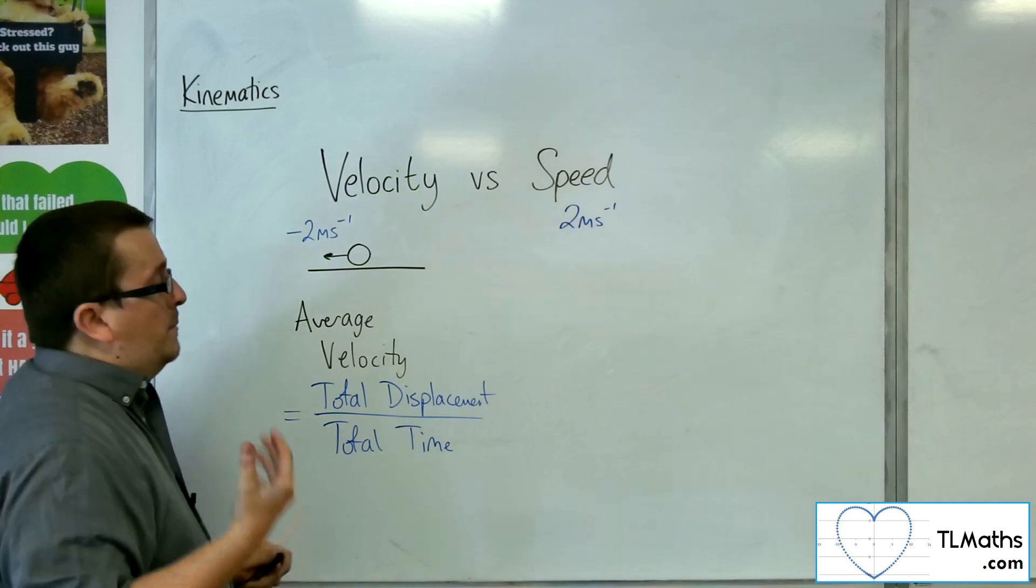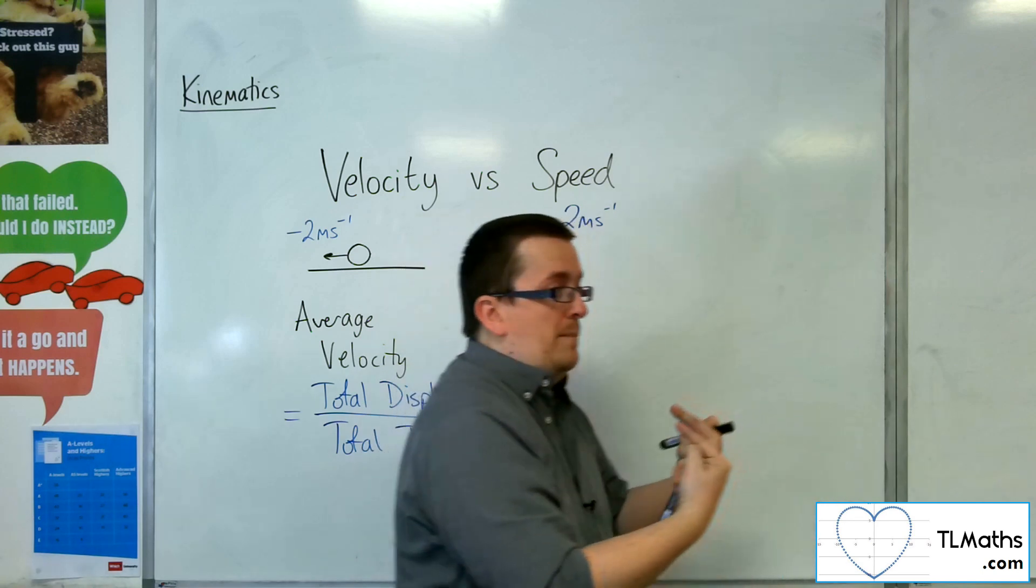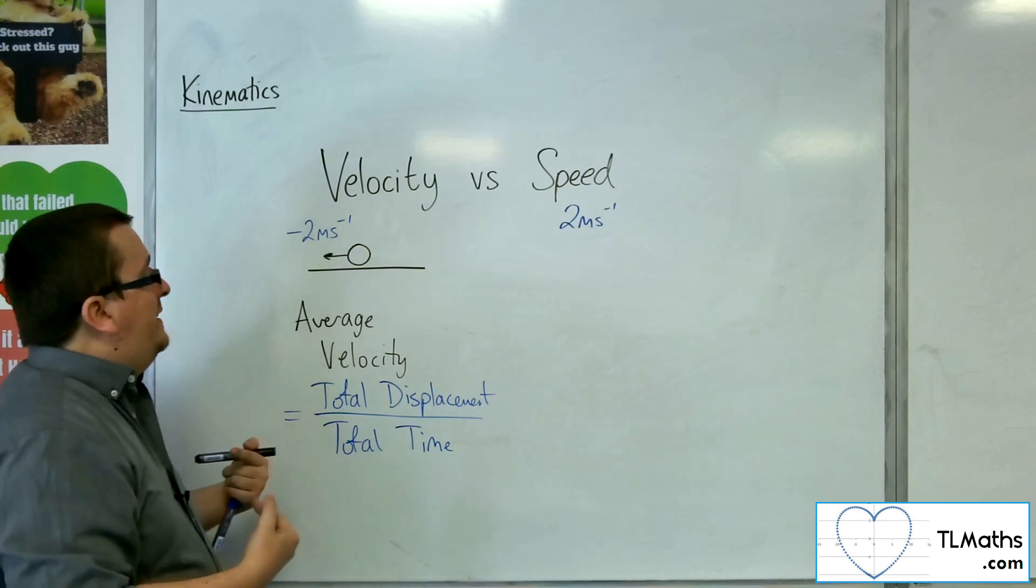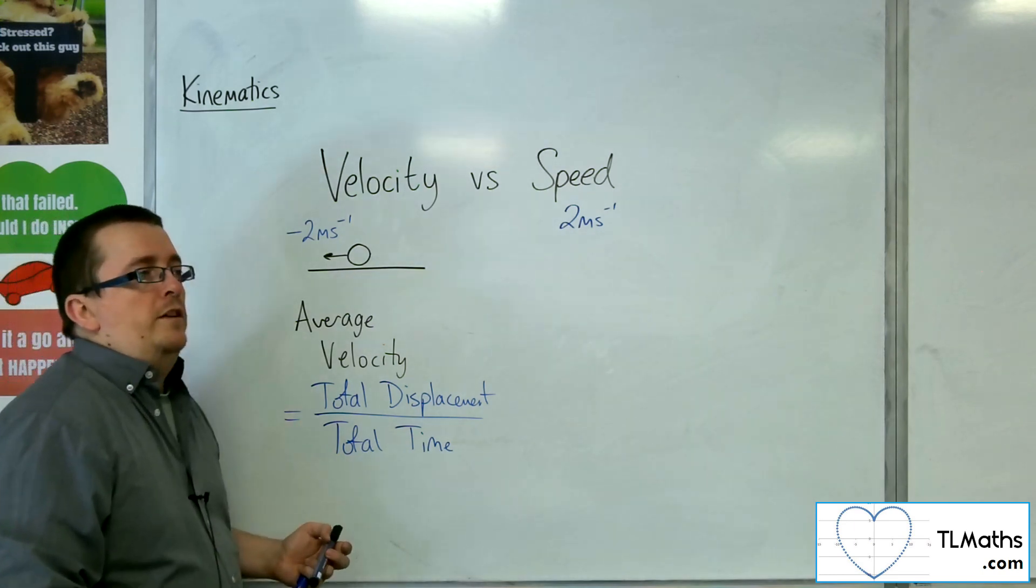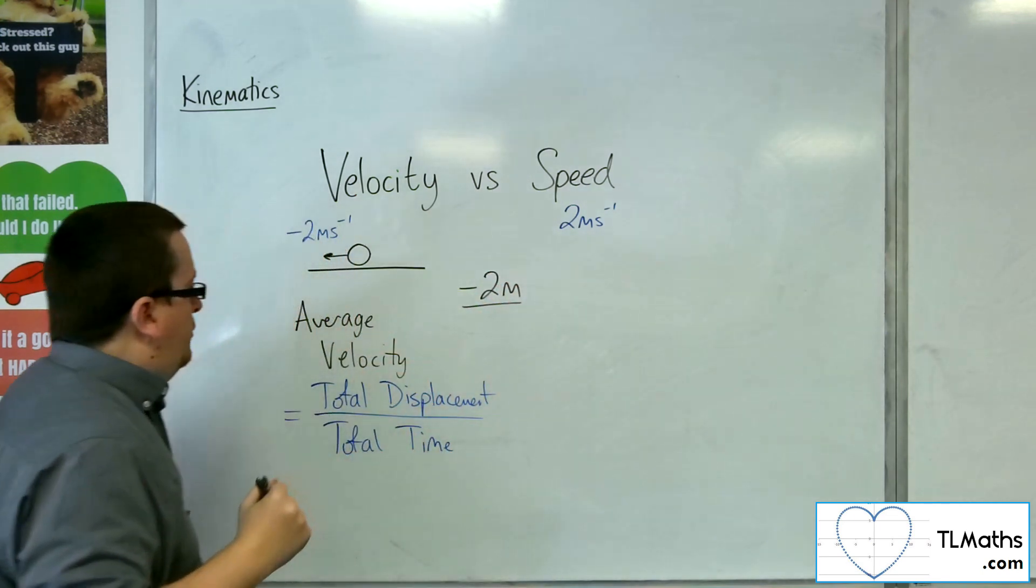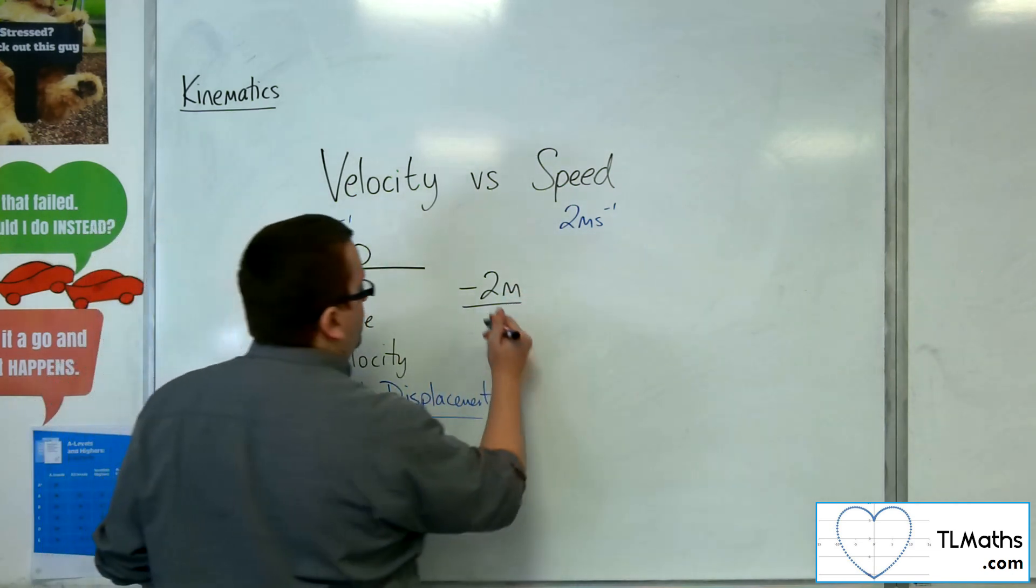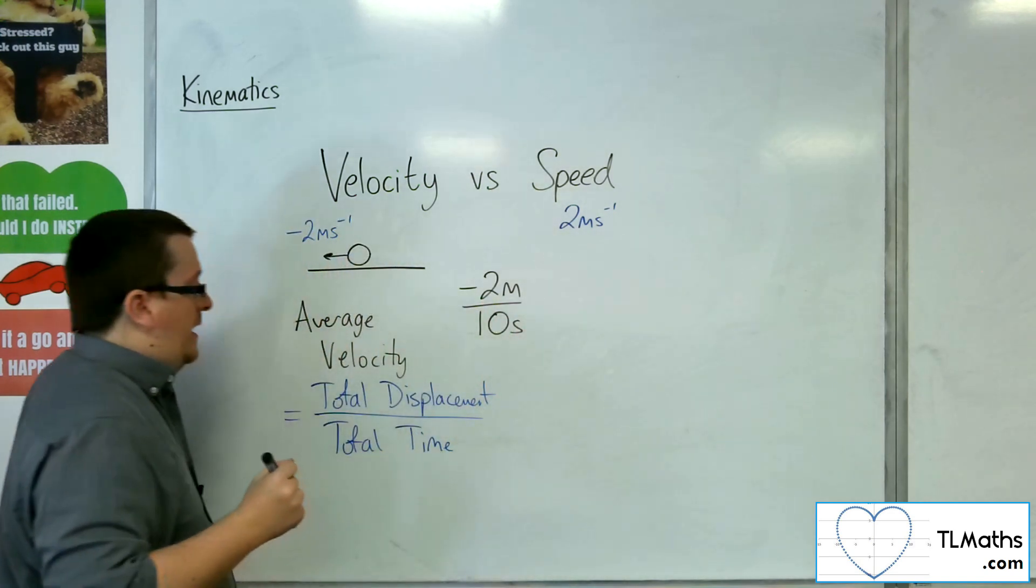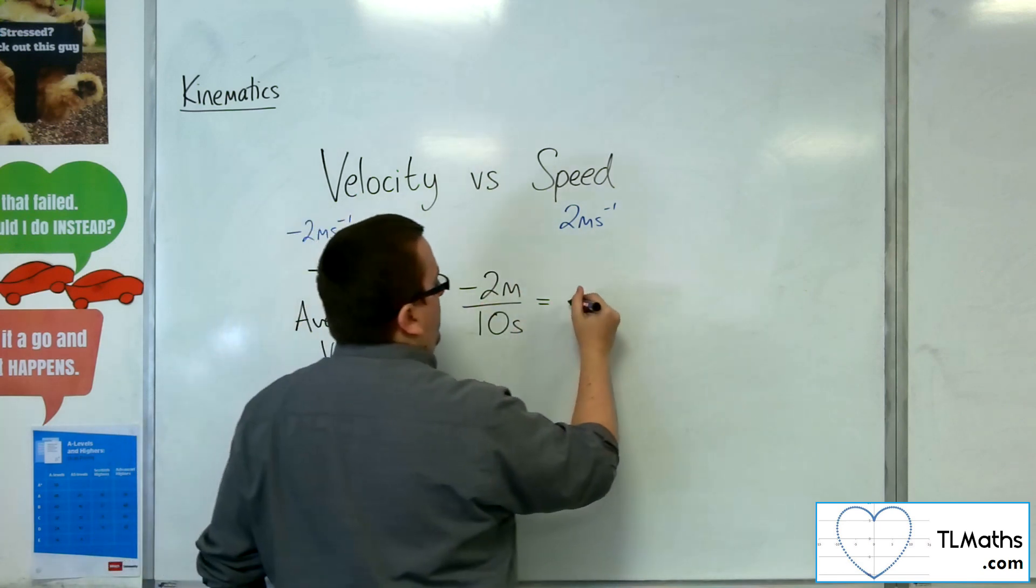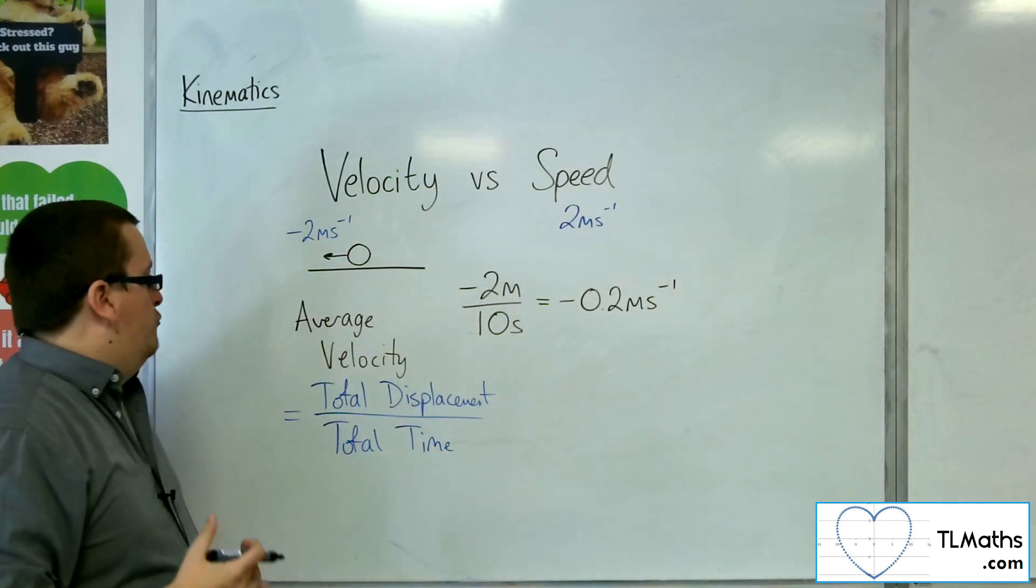So in the previous video we looked at somebody who'd walked 5 meters in that direction and then 7 meters back again. Their displacement was therefore minus 2 meters. Now if they did that over, let's say they had a total displacement of minus 2 meters, and then they did that in 10 seconds in their total time. Then we would be looking at minus 2 over 10, so minus one-fifth or minus 0.2 meters per second as their average velocity.